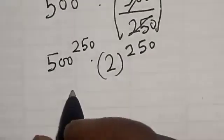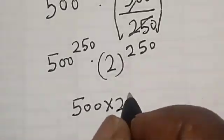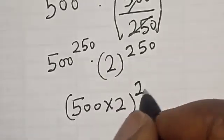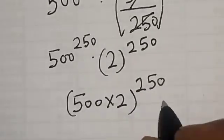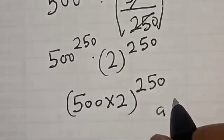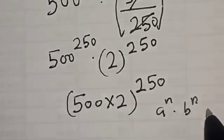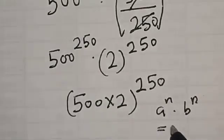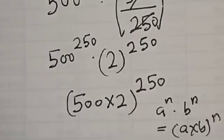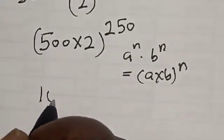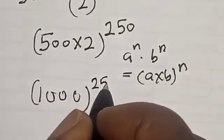This becomes 500 multiplied by 2, raised to power 250. That is, if you have a raised to power n multiplied by b raised to power n, this is equal to a multiplied by b raised to power n. So 500 times 2 is 1000, raised to power 250.